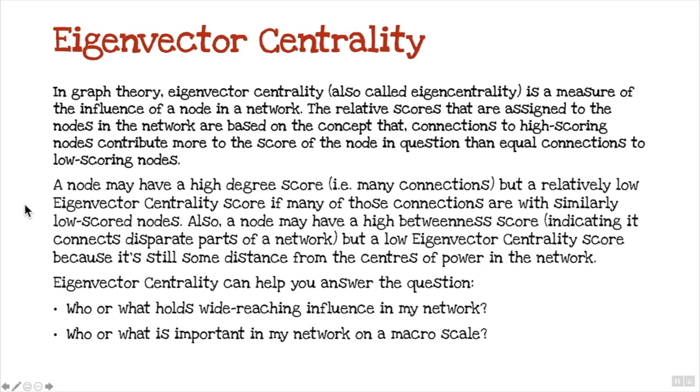What that means is a node may have a high degree score, i.e. many connections, but a relatively low eigenvector centrality score if many of those connections are with similarly low-scored nodes. Also, a node may have a high betweenness score, indicating it connects disparate parts of the network, but a low eigenvector centrality score because it's still some distance from the centers of the network. So we use this eigenvector centrality to help us answer the question of who or what holds wide-reaching influence within the network, or who or what is important within the network.